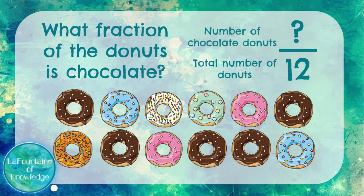The numerator would be the number of chocolate doughnuts, which is five. So five-twelfths of the doughnuts are chocolate.